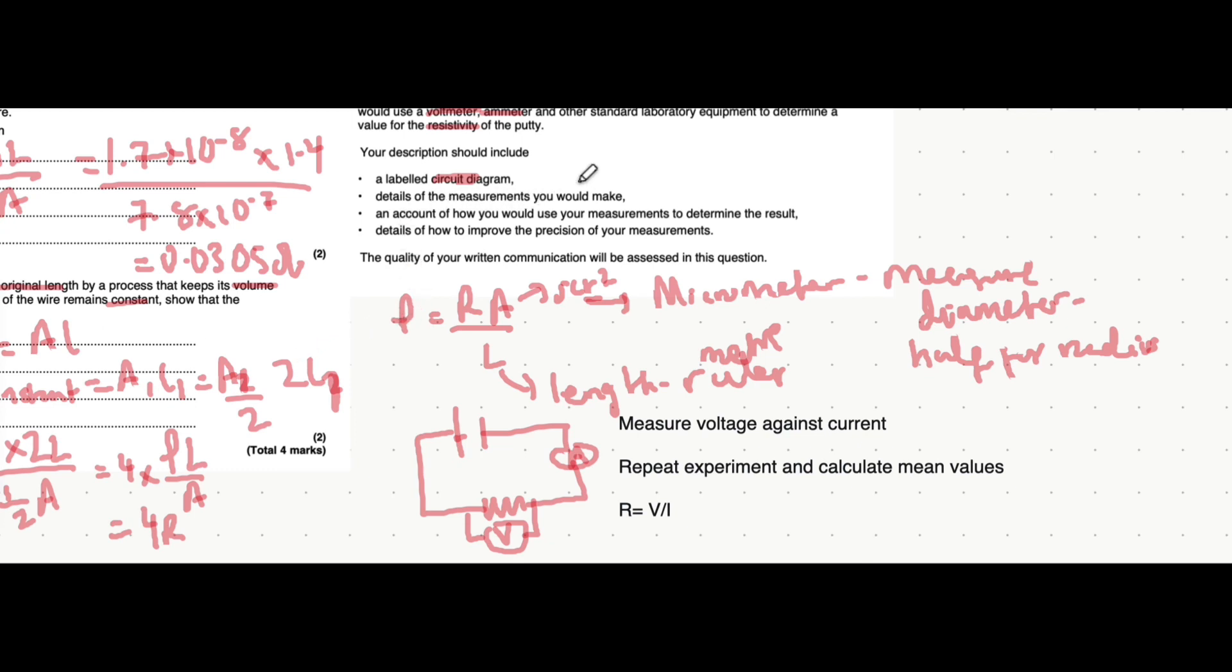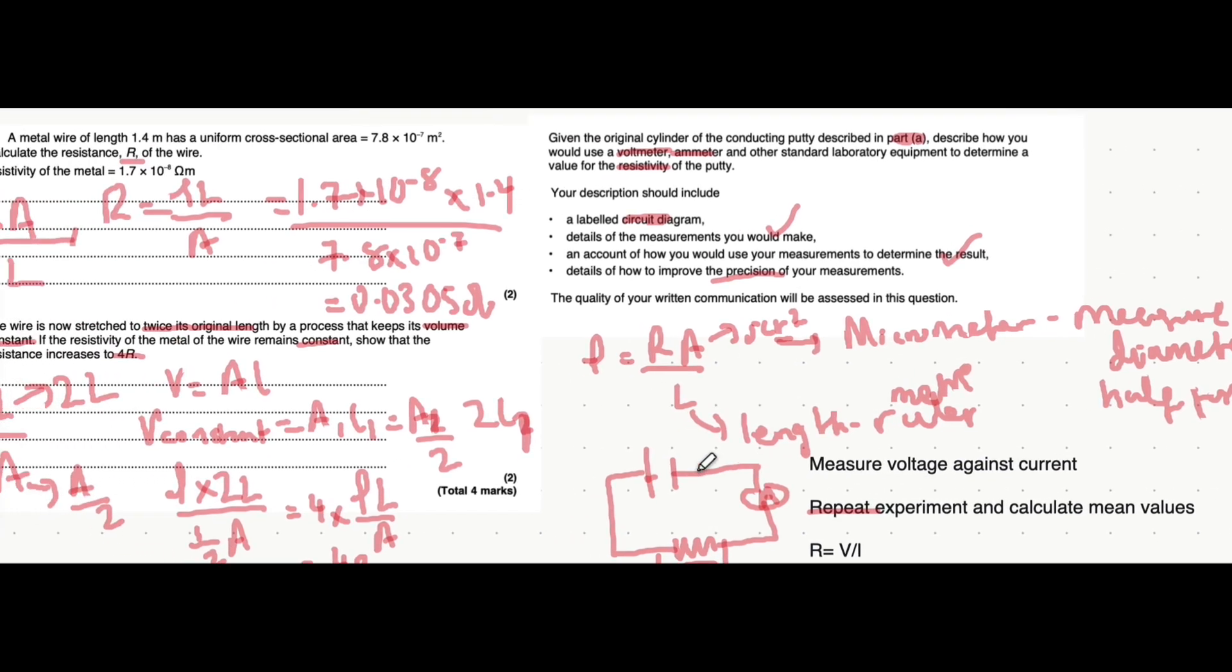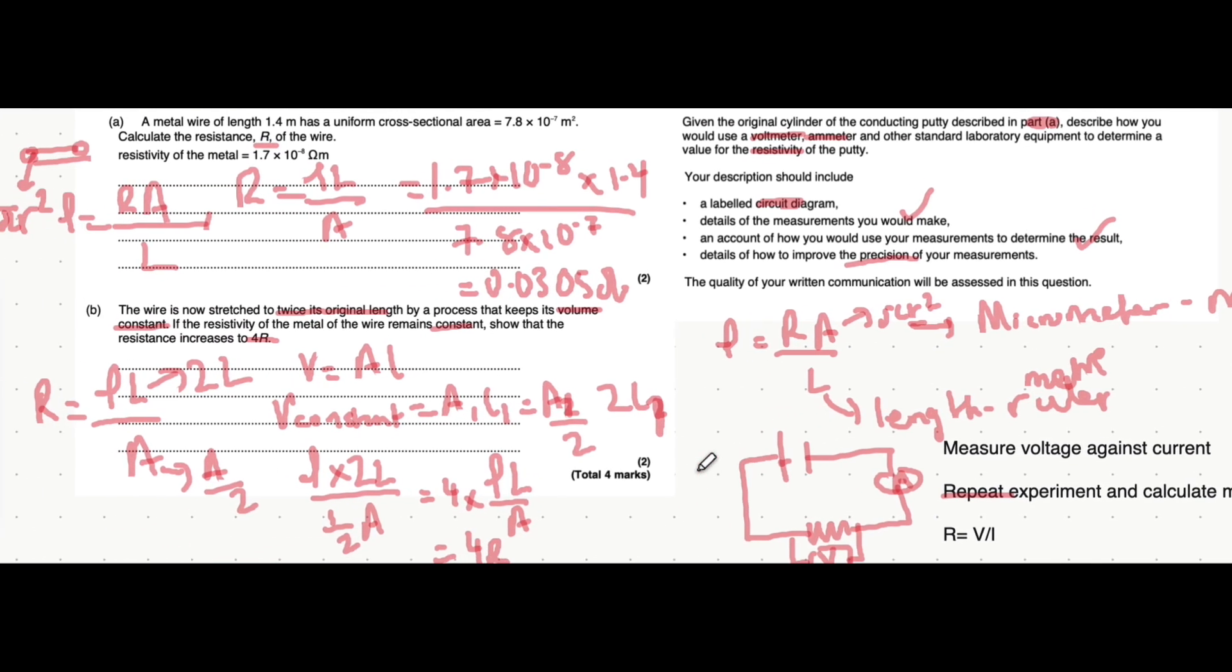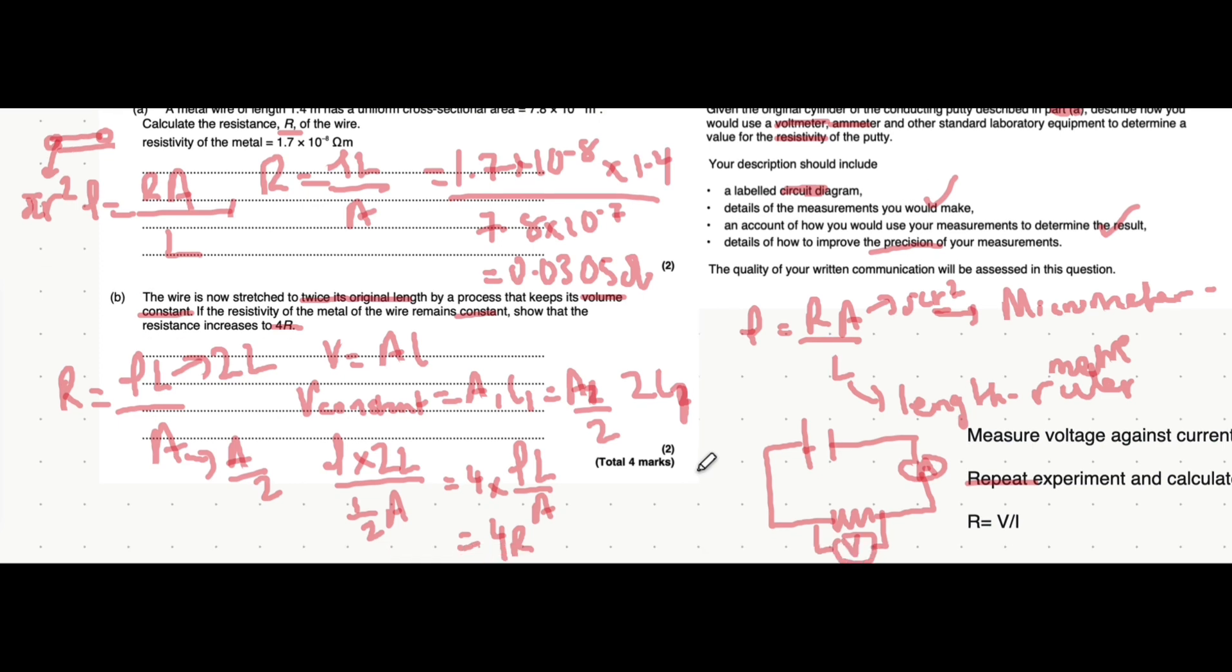I'm just going to quickly look at the bullet points to see if we missed anything. Details of the measurements you'd make. You know, we've mentioned that. And, the kind of how you'd use the measurements. Yeah, we've talked about that. All these equations. How to improve the precision. Yeah, repeat the experiment. That's everything that you'd mention for that question, actually. Hopefully, this made sense and it's cleared up a lot of things about resistivity. These are just a few questions that I know has come up quite commonly in exams, actually.